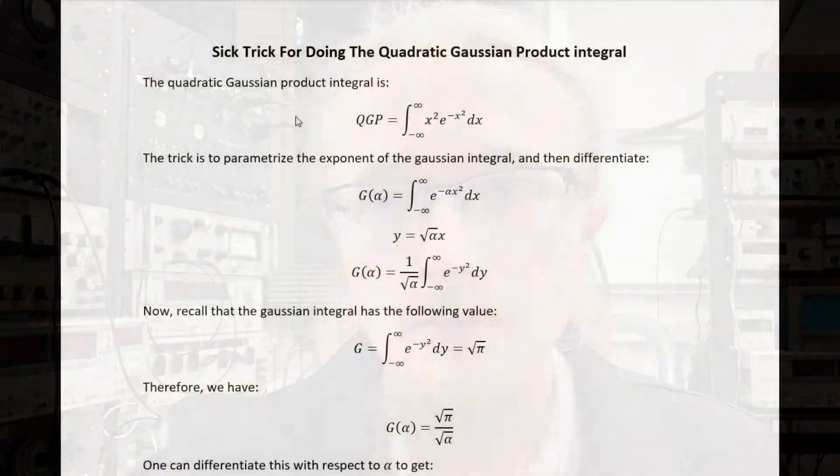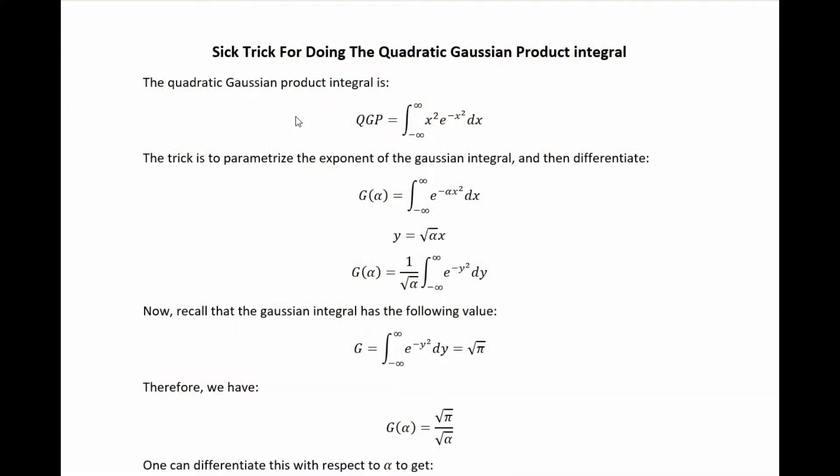Here follows the math. As I said in the intro, the quadratic Gaussian product integral is simply the integral from negative infinity to positive infinity of x squared e to the negative x squared.